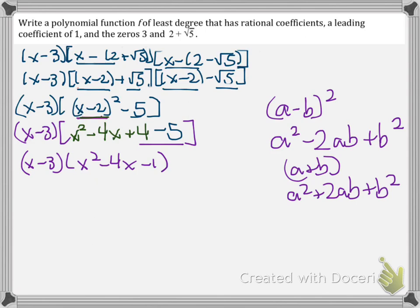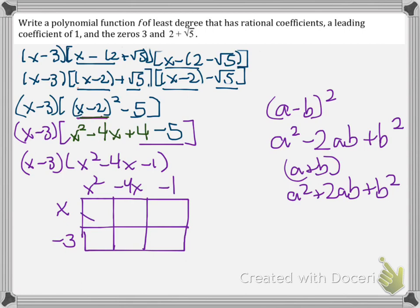And now we just need to multiply this. So you can use a box method or you can use the vertical method that we learned earlier in this chapter. I'm going to go ahead and use the box method. So x minus 3, x squared minus 4x and minus 1. So this becomes x cubed minus 4x squared minus x minus 3x squared, 12x and a positive 3.